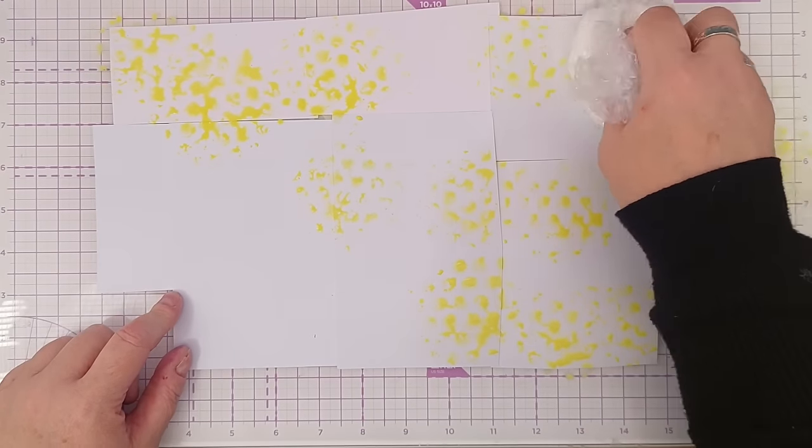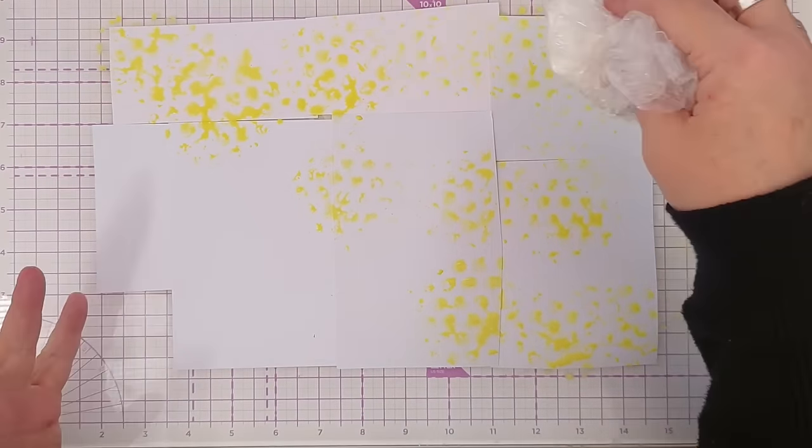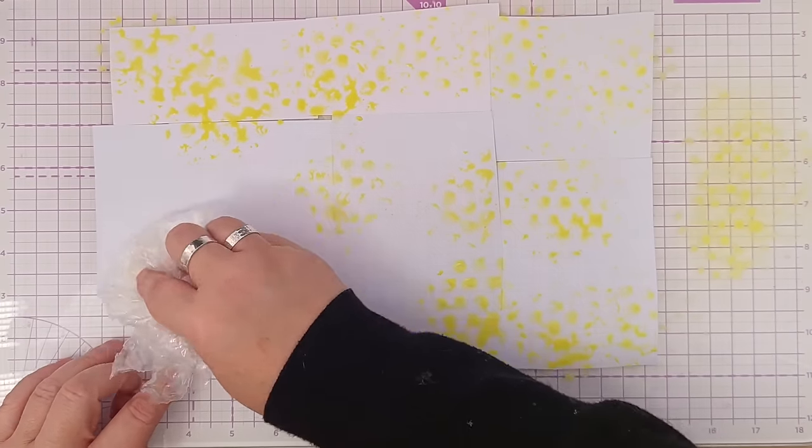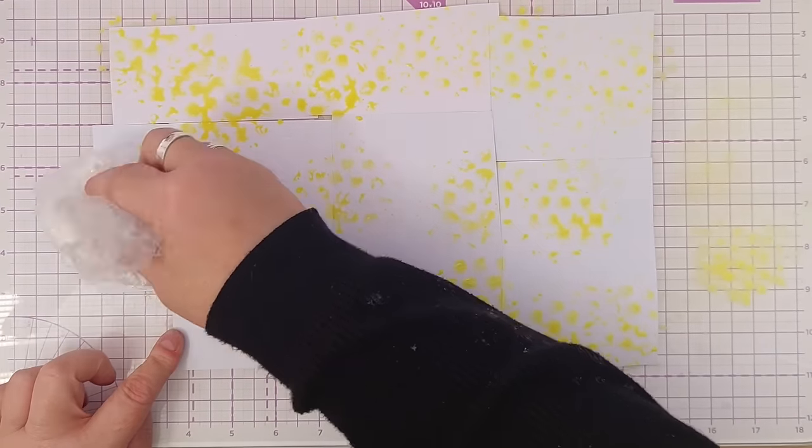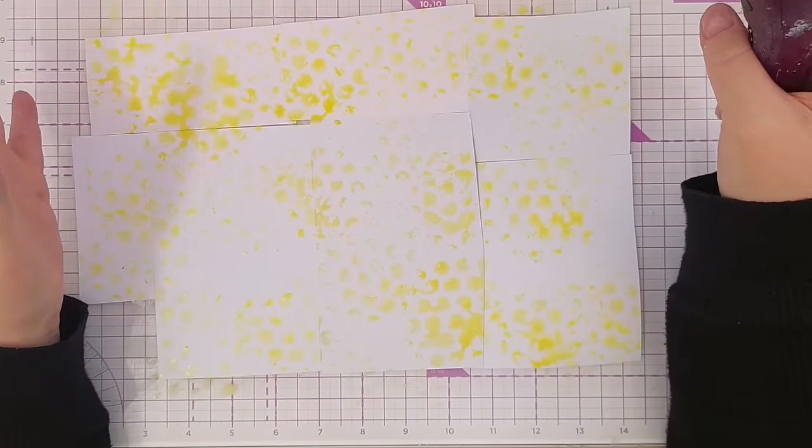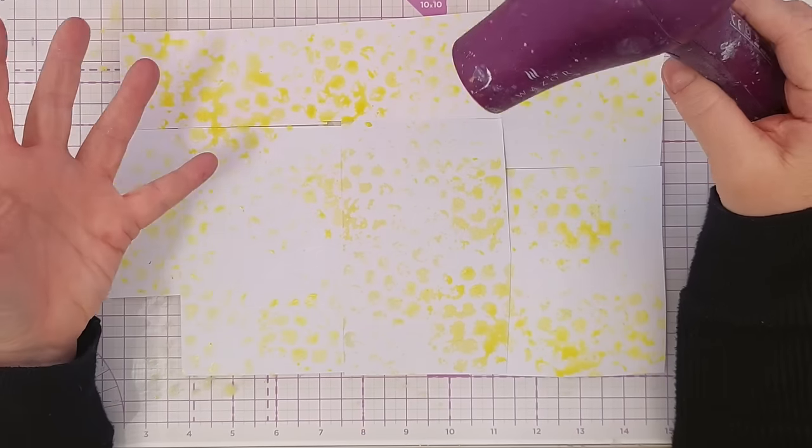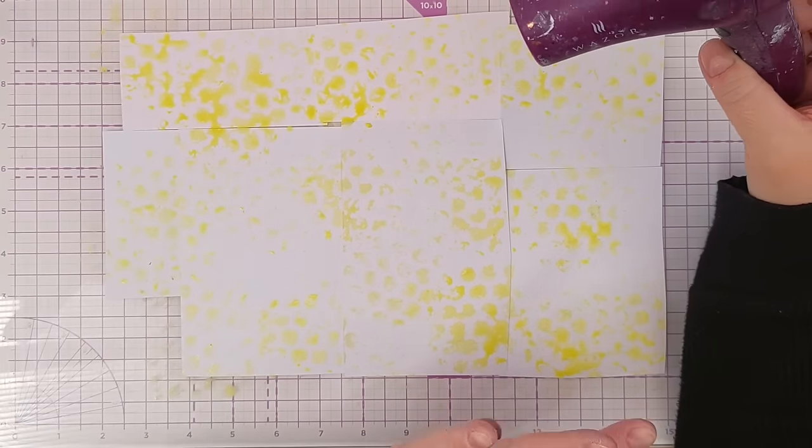I want to get a bit of each color. I'm using squeeze lemonade, peacock feathers and picked raspberry today. Before I put the next layer on I want to dry it because I want to keep the layers fairly separate.